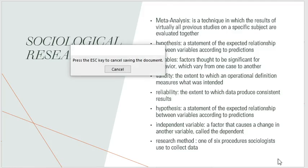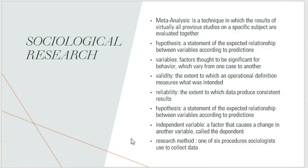Let's talk about research methods. A meta-analysis is the study of many peer-reviewed articles and research studies conducted by other researchers in one topic area. If you want to become an expert in your field, you find a topic, gather all peer-reviewed articles related to it, and analyze them — that is a meta-analysis. A hypothesis is an educated guess that usually has an independent variable and a dependent variable, studying how one thing affects another. Variables are factors thought to be significant for behavior that vary from case to case.